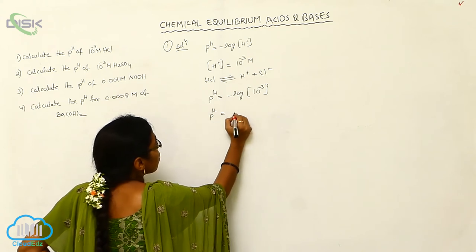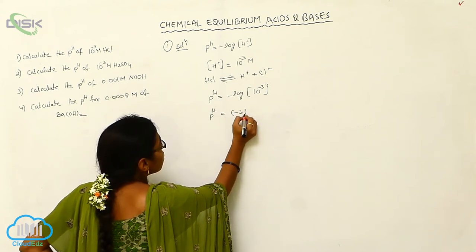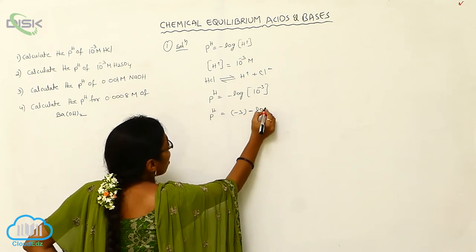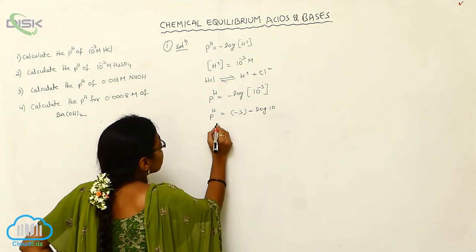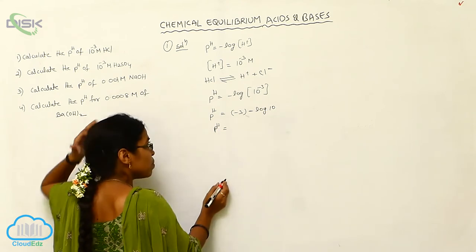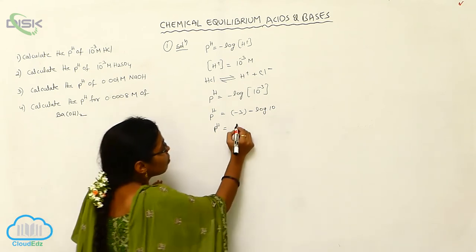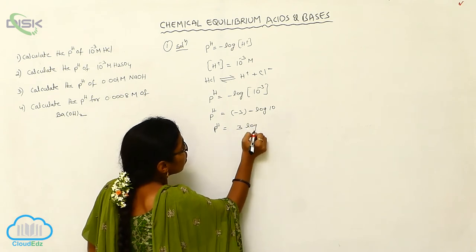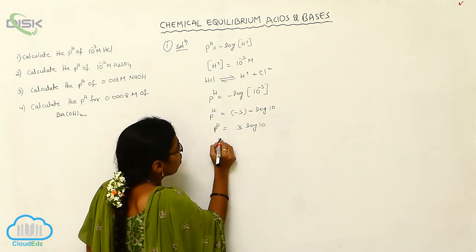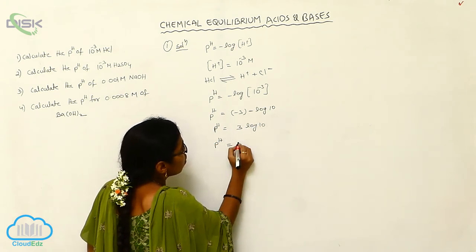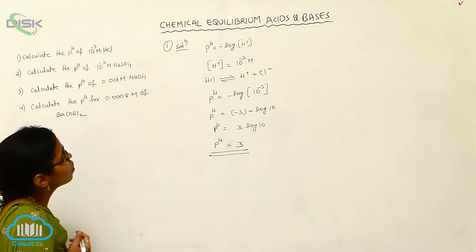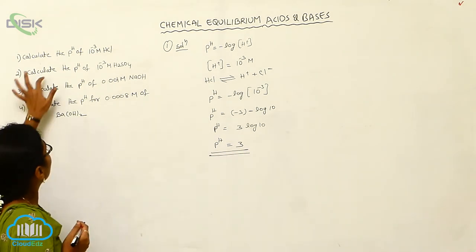So pH = −log(10⁻³) = −(−3 log 10) = −(−3) = 3, since log 10 = 1. Therefore pH = 3. That is the solution to problem number 1.